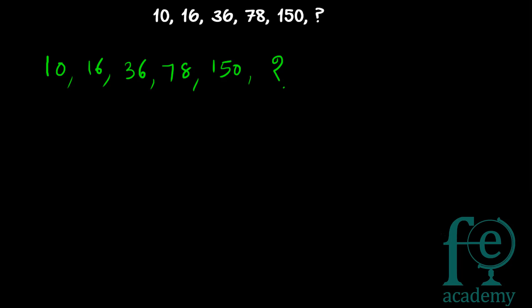So let's try to find the difference between consecutive terms. 10 plus 6 equals 16, then 16 plus 20 equals 36, then 36 plus 42 equals 78, and 78 plus 72 equals 150. So the differences are 6, 20, 42, 72. Is there any connection in these?